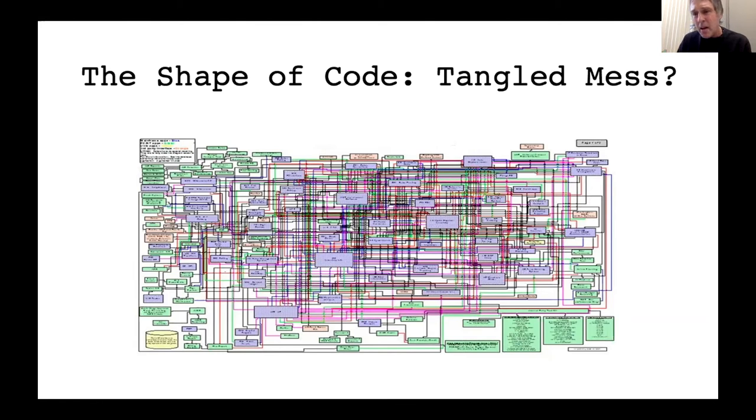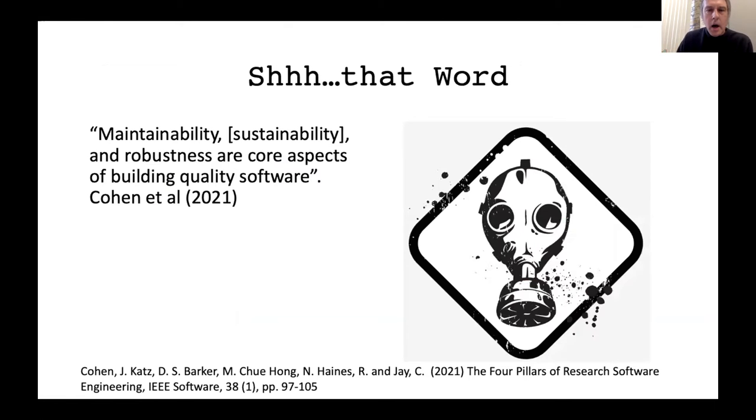This leads us to questions: what do we mean by sustainability in terms of software and software engineering? How do we measure whether our software is sustainable? And what might enable software to become sustainable? This brings us back to this horrible word, and we've been kicking this can down the road for some time. This is a recent definition of the word sustainability in relationship to research software: that it is maintainable, sustainable, and robust, and somehow this is the core quality of what constitutes sustainable software.